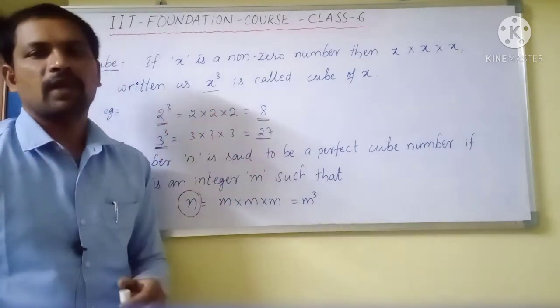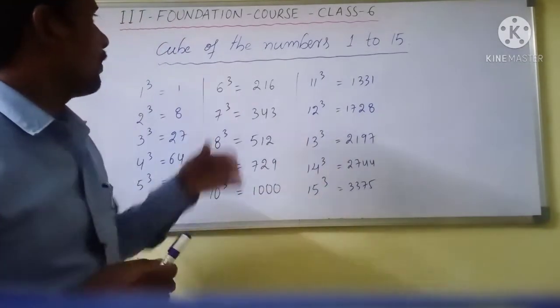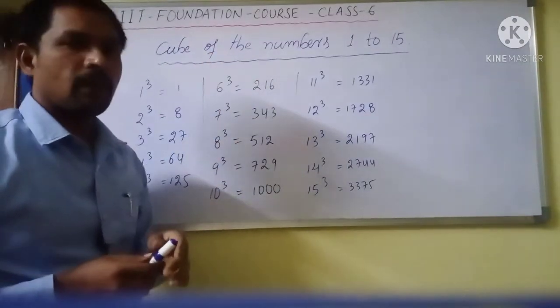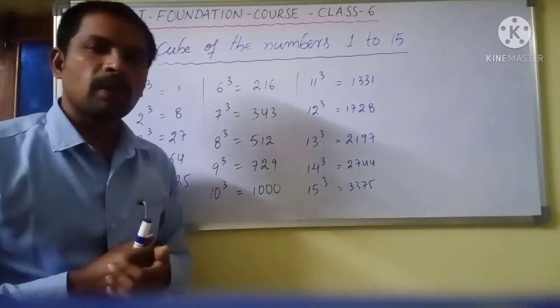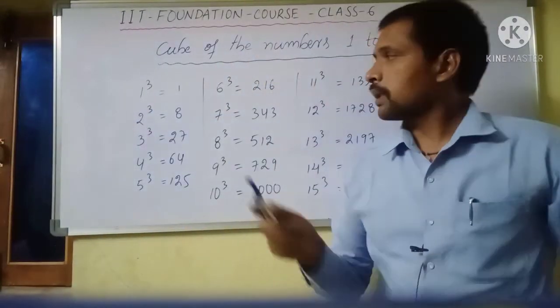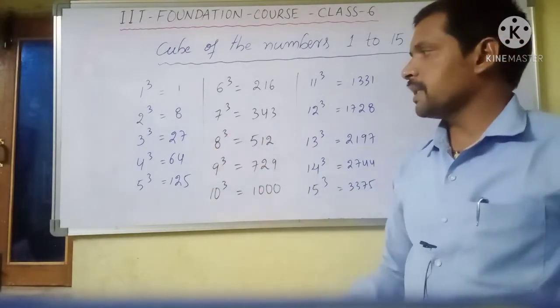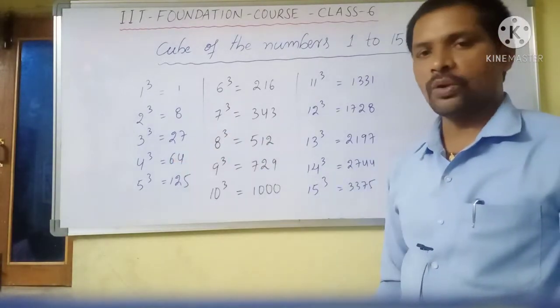Then we'll go for 1 to 15 cube numbers. Now we'll remember cube of the numbers 1 to 15. 1 cube is 1, 2 cube value is 8, 3 cube value is 27, 4 cube value is 64, 5 cube 125, 6 cube 216.